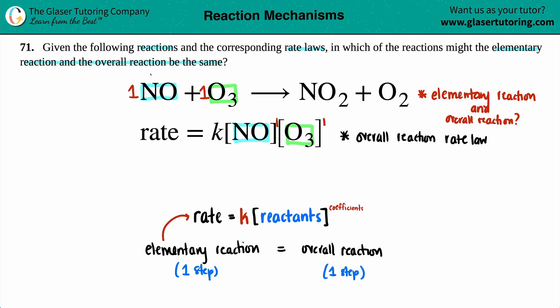So this elementary reaction is abiding by the overall rate law. And if they are identical, will the elementary reaction and the overall reaction be the same? Yes, they will be. So in this case, yes, they are the same. Because the elementary step that was provided, the single step, is the same identical to the rate law. And the rate law is always the overall reaction information. So if they're identical, then they got to be the same.